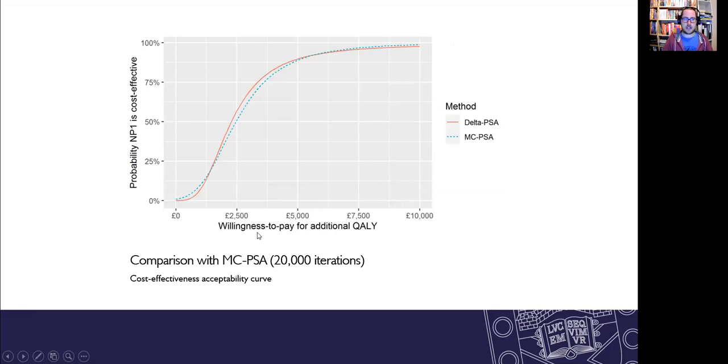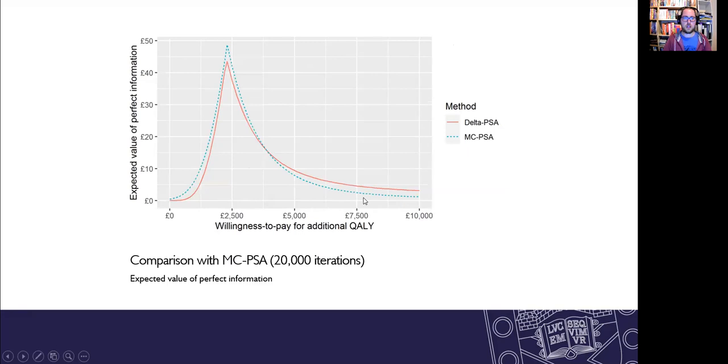You can translate that into a cost effectiveness acceptability curve. So now we have the delta PSA is the solid red line. Monte Carlo PSA is now the dashed blue line. So you see they match quite closely. Likewise, we have the expected value of perfect information curves with the Monte Carlo PSA in the blue dashed line and the delta PSA with the red line. So working quite well for value of information analysis as well.